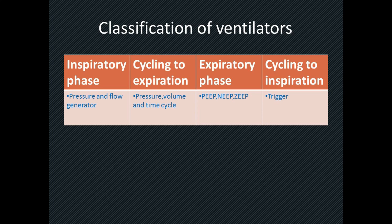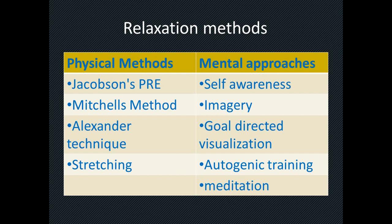The next flowchart covers the classification of ventilators. Broadly, ventilators are classified by inspiratory phase — pressure generator and flow generator — and cycling to expiration — pressure, volume, and time cycle. The expiratory phase includes PEEP (positive end-expiratory pressure), NEEP (negative end-expiratory pressure), and ZEEP (zero end-expiratory pressure). Cycling to inspiration includes the trigger mechanism.